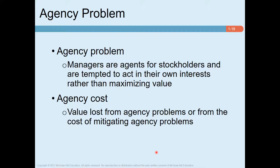More formally, the conflicts between shareholders' and managers' objectives create this agency problem. Agency problem is when agents are not pursuing principals' goals — when managers do not pursue shareholders' goals. So then the agency problem arises.